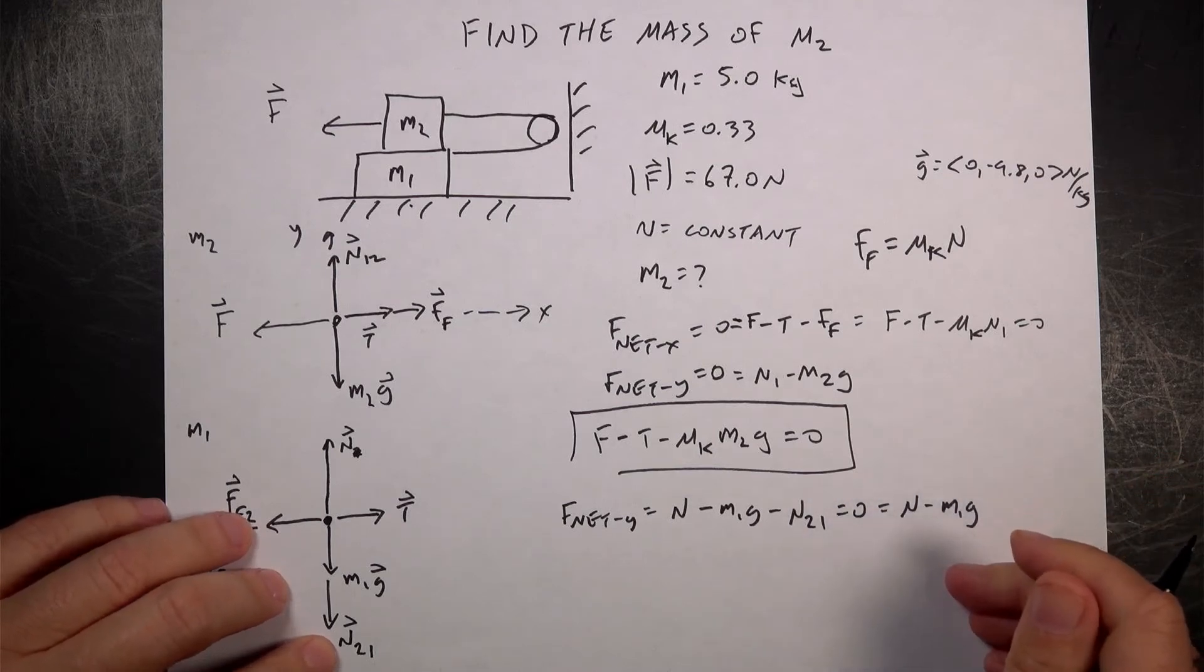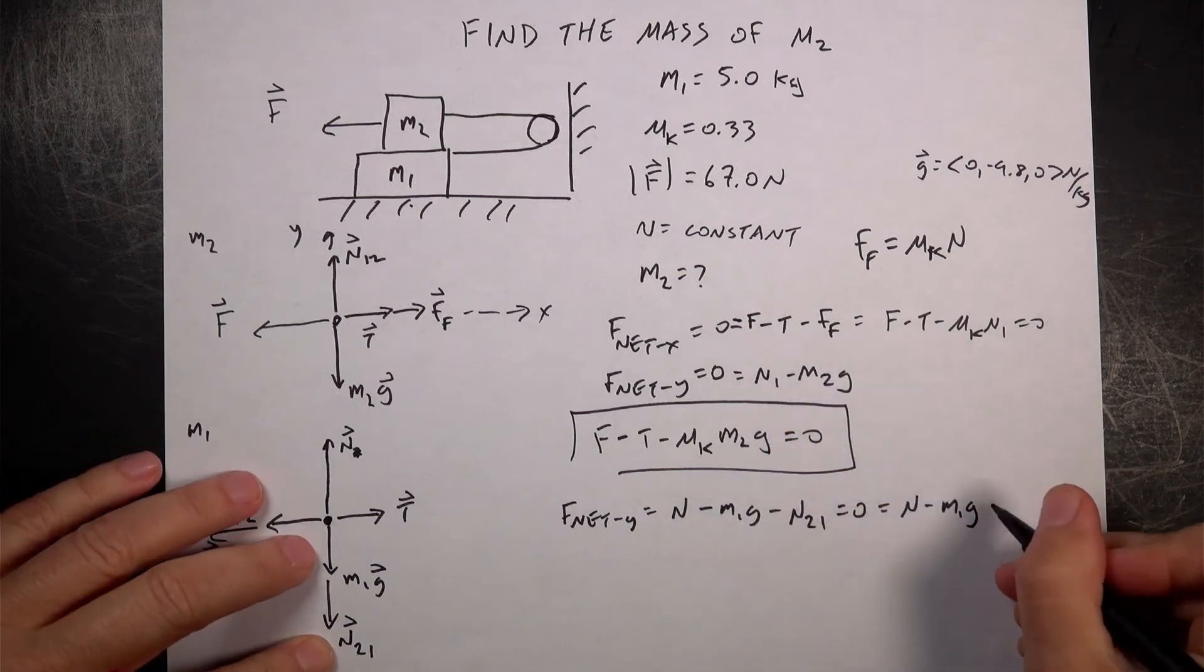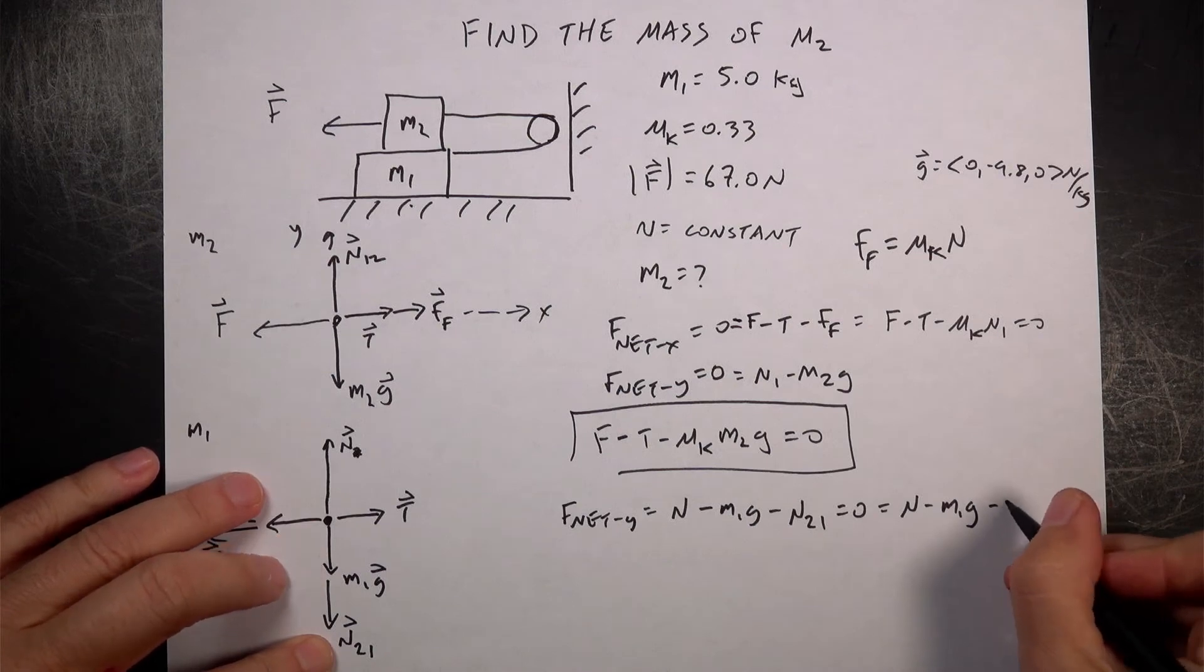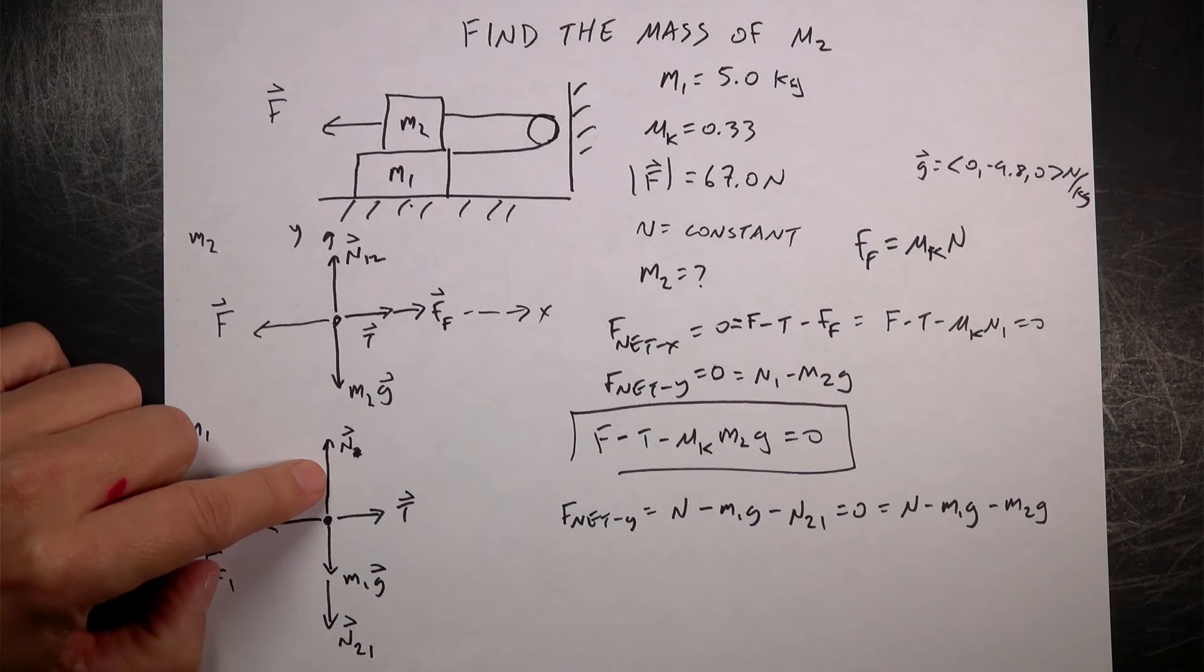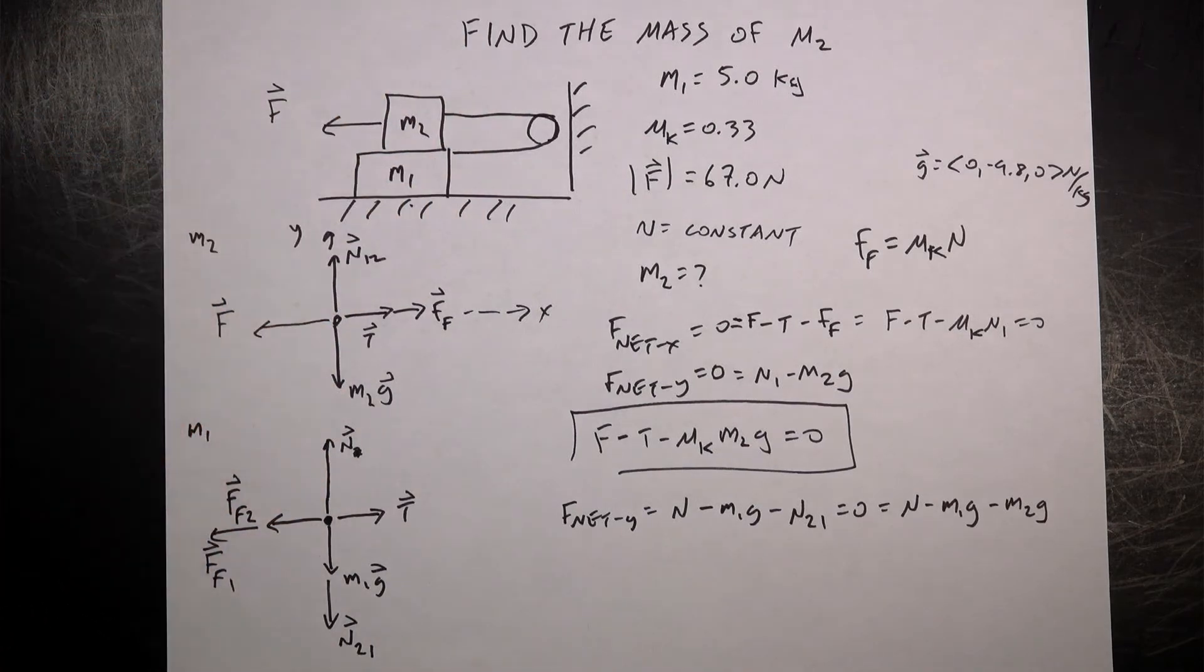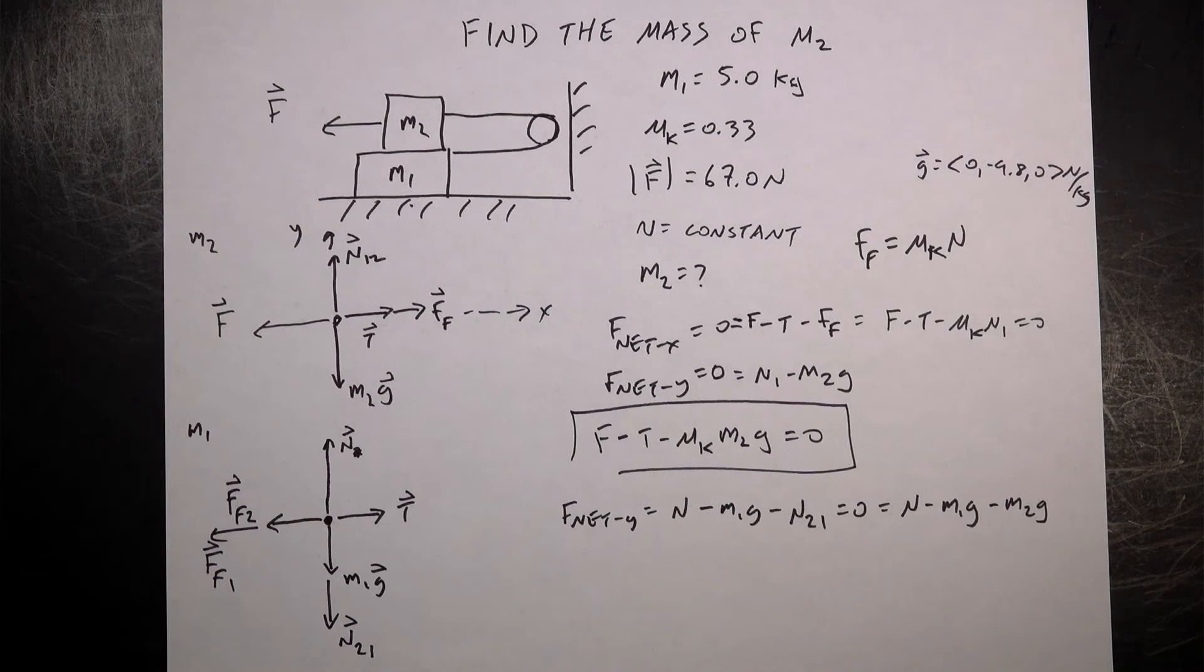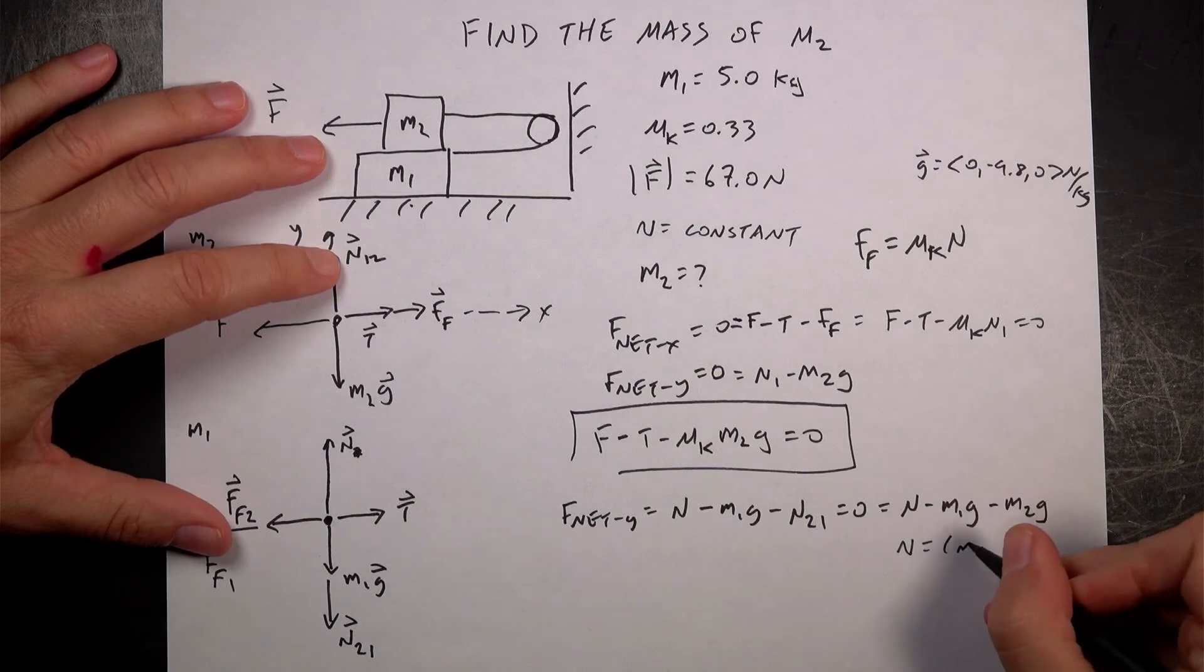And then I know the magnitude of this because I found it up here. It's M2G. So it's going to be minus M2G. And that makes sense, right? This says this force has to support both the masses, which we knew. And if you took that shortcut, I wouldn't recommend that. But I could see a lot of people doing that. So now I get N equals M1 plus M2G.